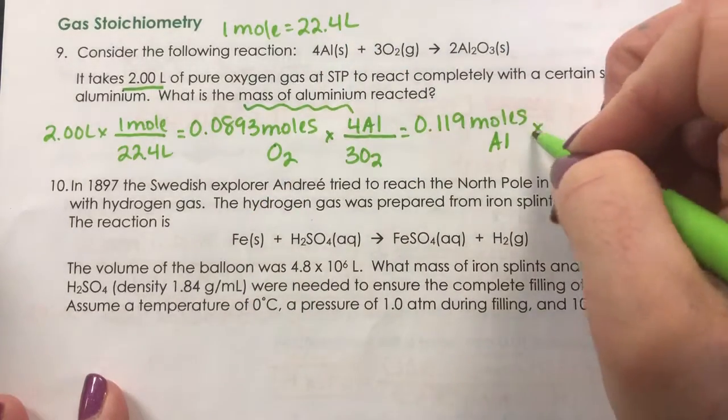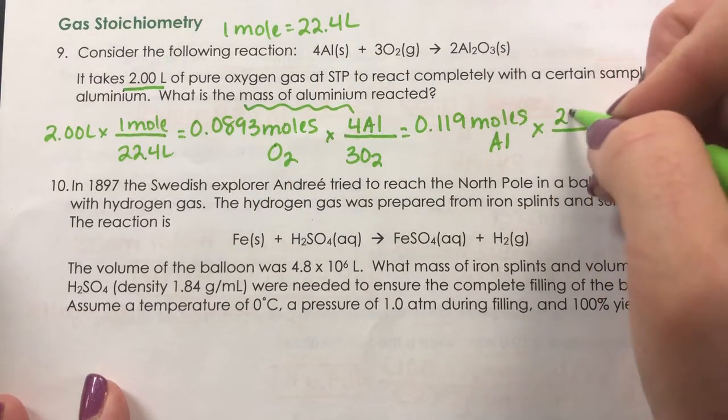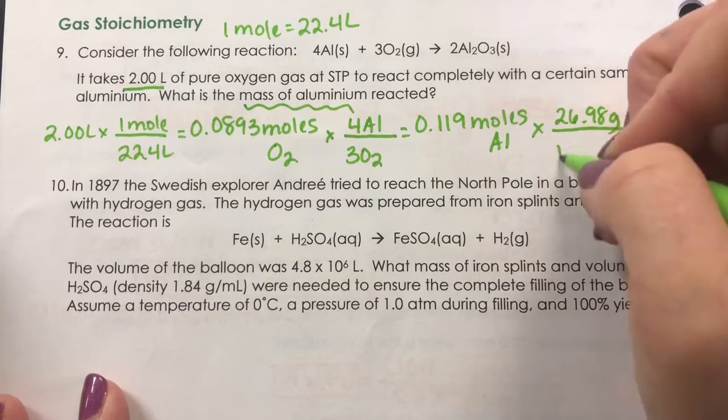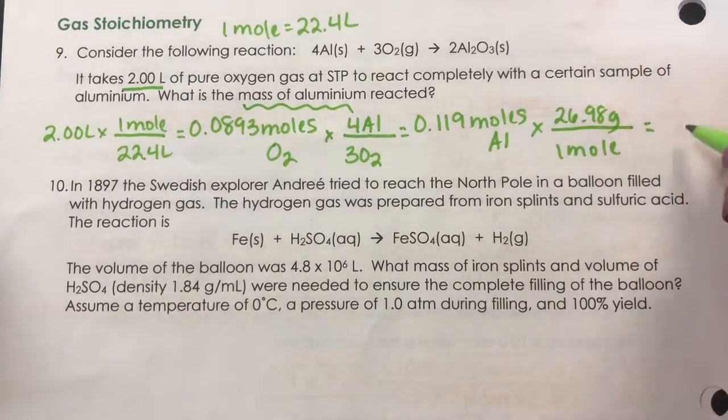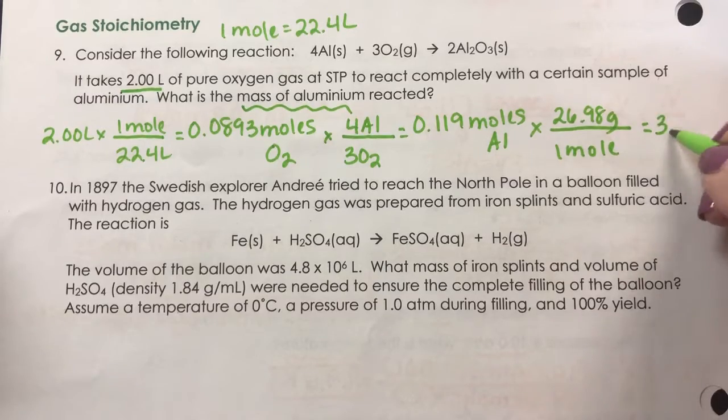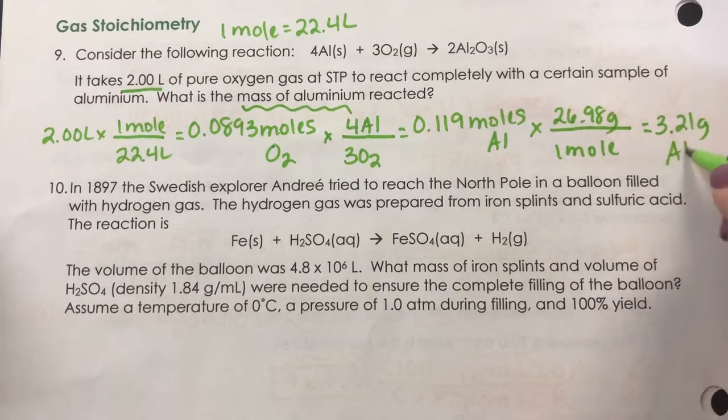And then we just need to multiply that by the molar mass, which is 26.98 grams. So if two liters of oxygen is reacted, we will need 3.21 grams of the aluminum.